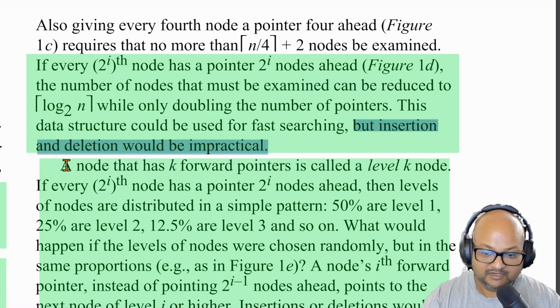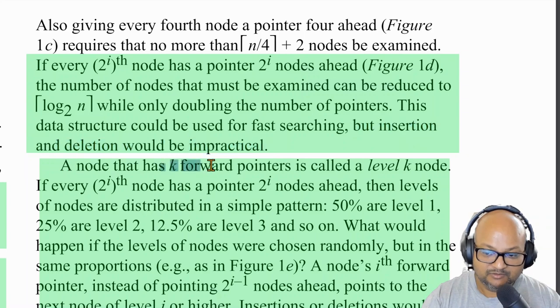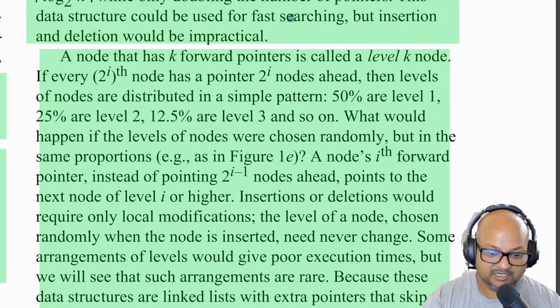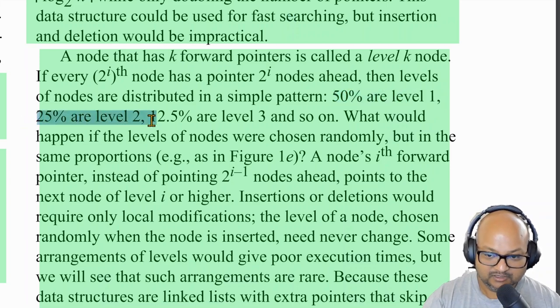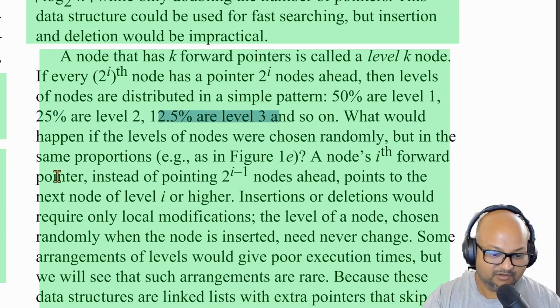In terms of terminology, a node with k forward pointers is called a level k node. And if you organize your data structure the way we just described it, the number of level k nodes would follow a familiar logarithmic pattern where half of them would be level one, one fourth would be level two, one eighth would be level three, and so on.